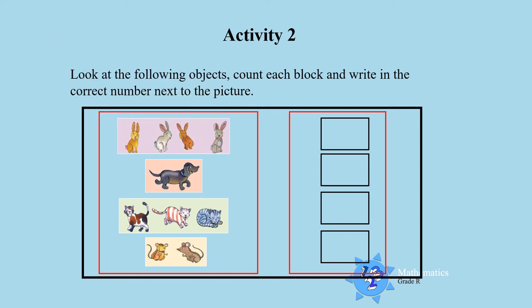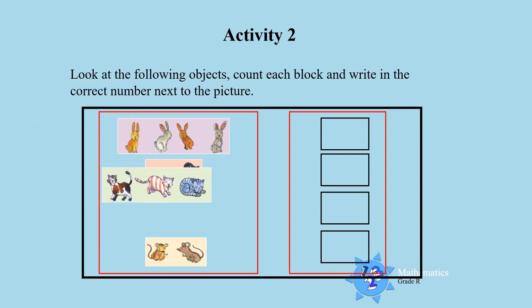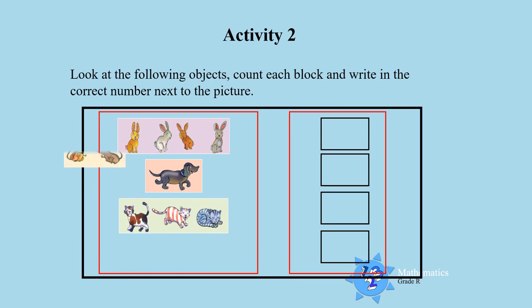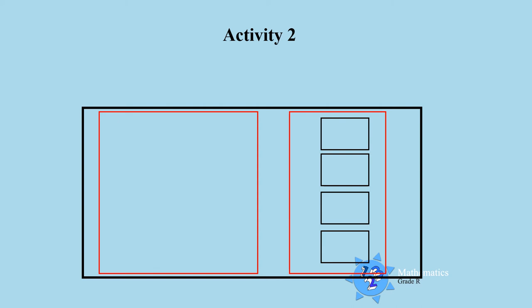Here's rabbits, a dog, cats and mice. How many of each do you see? Let's see if you count the objects correctly boys and girls. How many rabbits do you see? 1, 2, 3, 4, yes, 4 rabbits. Very good.